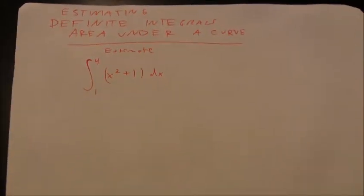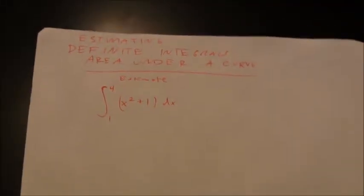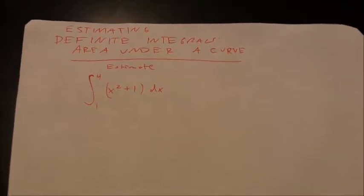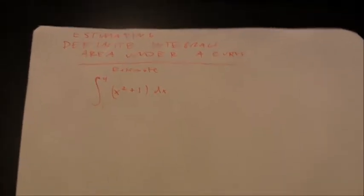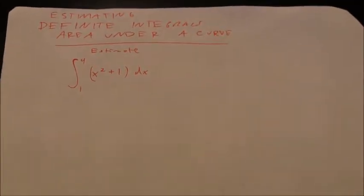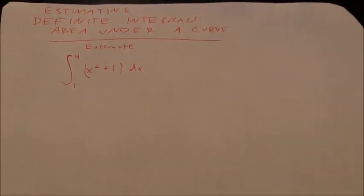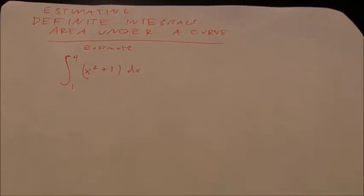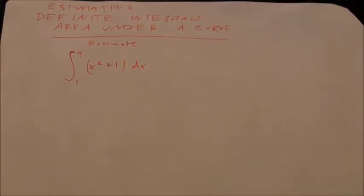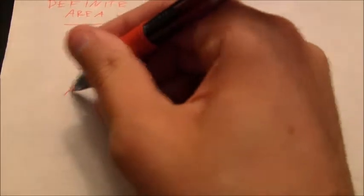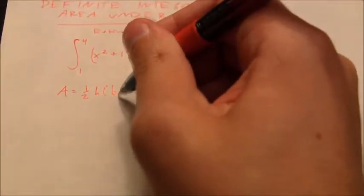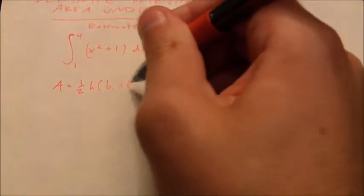You can use the trapezoidal rule to estimate the area under a curve. You're not going to be able to find the actual area until you take calculus. But the estimation is pretty simple if you know how to find the area of a trapezoid. The area of a trapezoid is equal to half the height times the sum of the bases.